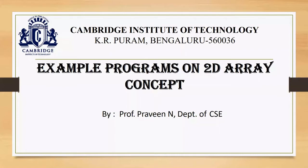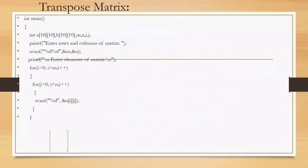Welcome. Today's concept covers example programs on two-dimensional arrays. First, we'll see a program for transpose matrix. The meaning of transpose is: whatever elements are in the first row will be converted to the first column, and elements in the second row will be converted to the second column.